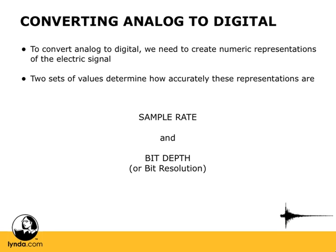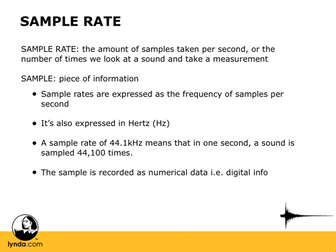There are two sets of values that determine how accurate these representations are: sample rate and bit depth. Let's take a look at sample rate first. Sample rate is actually just what it sounds like — it's the rate of taking samples. It's the amount of samples we take per second, or the number of times each second we look at a sound and take a measurement. It's the number of times we're analyzing and scrutinizing a sound to see what's actually there.